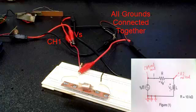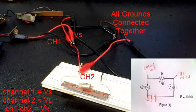I've connected channel 1 across the supply, channel 2 across the inductor. This means that to measure the voltage across the resistor, we must use the math setting to subtract channel 1 from channel 2.